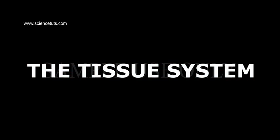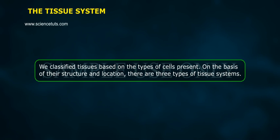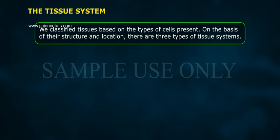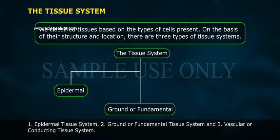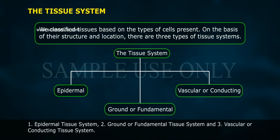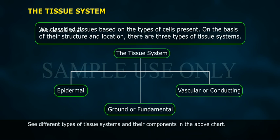We classify tissues based on the types of cells present. On the basis of their structure and location, there are three types of tissue systems: Epidermal Tissue System, Ground or Fundamental Tissue System, and Vascular or Conducting Tissue System. See different types of tissue systems and their components in the above chart.